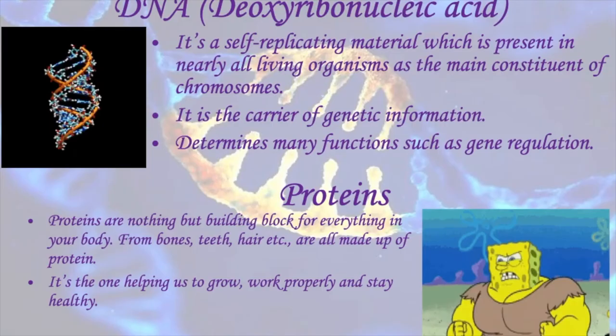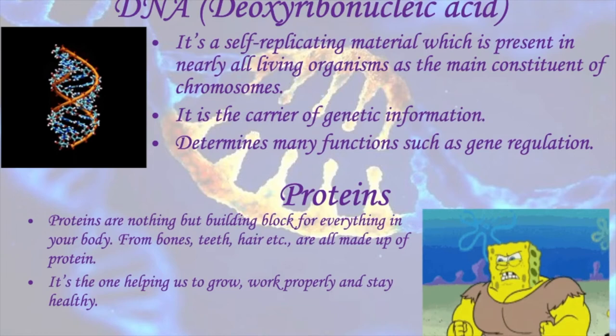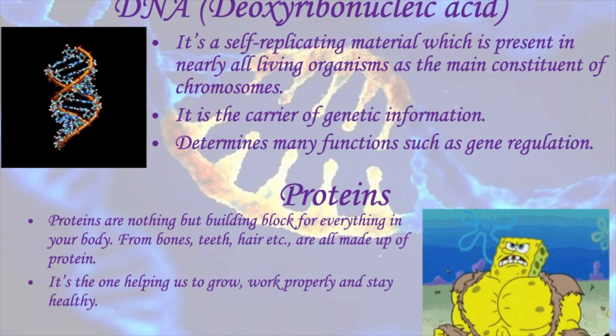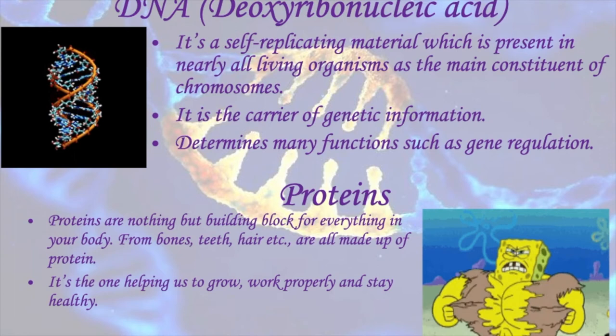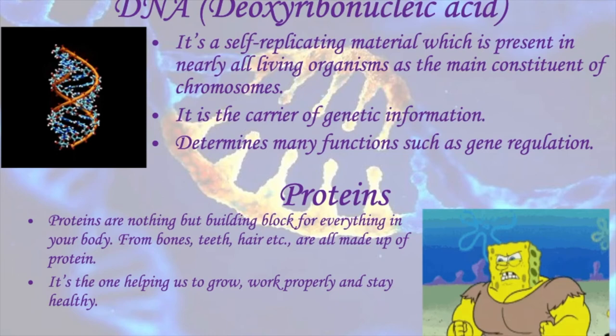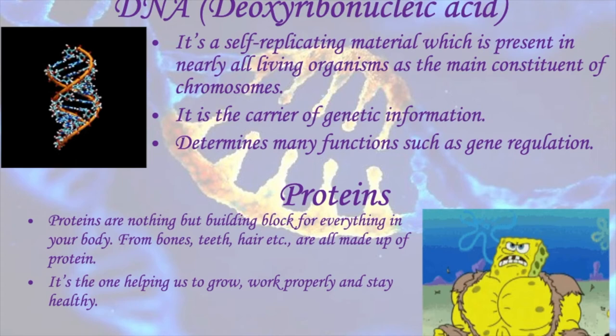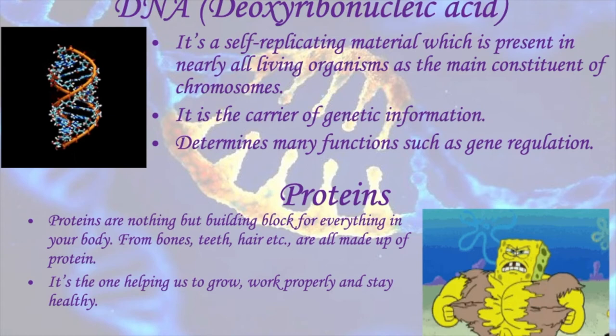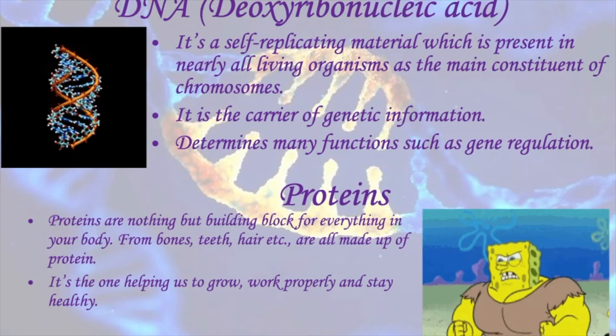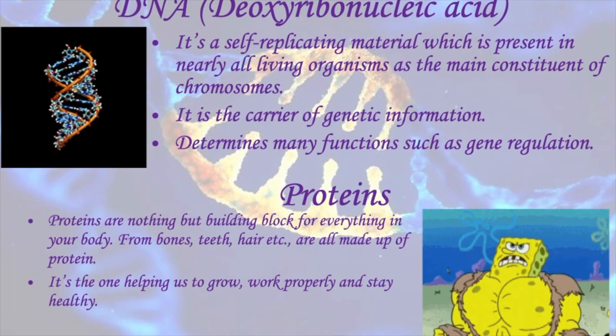Next, we'll look at DNA. DNA is a double-stranded structure made up of four nucleotides: adenine, thymine, cytosine, and guanine. DNA is a carrier of genetic information and determines many functions such as gene regulation. Protein is a building block — it helps you grow, work properly, and tries to maintain your body in a healthy state.